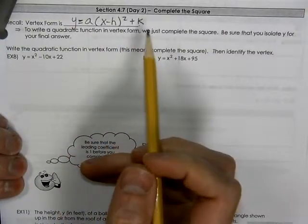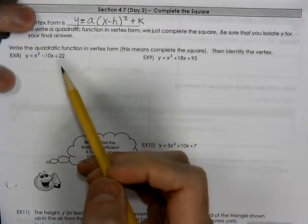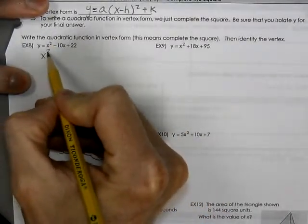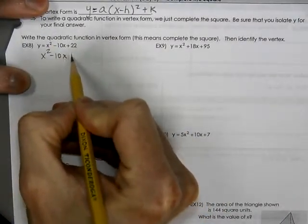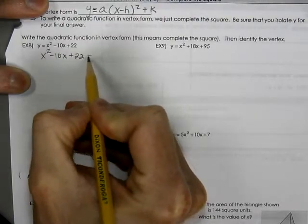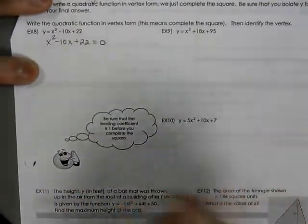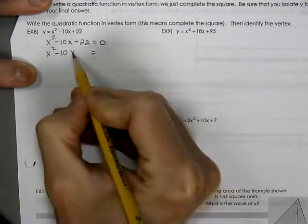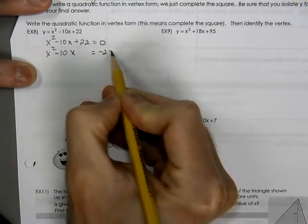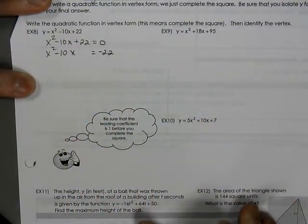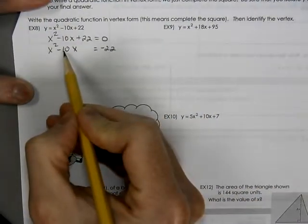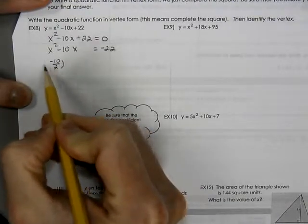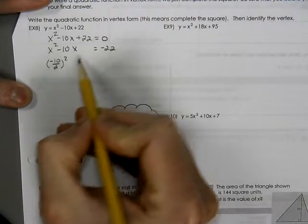When we deal with completing the square, trying to turn standard form into vertex form, we're going to take our equation, and we typically will equal it to zero. We want to move our c value to the other side of the equal sign. We're going to take our b value, divide it by 2, and square it.